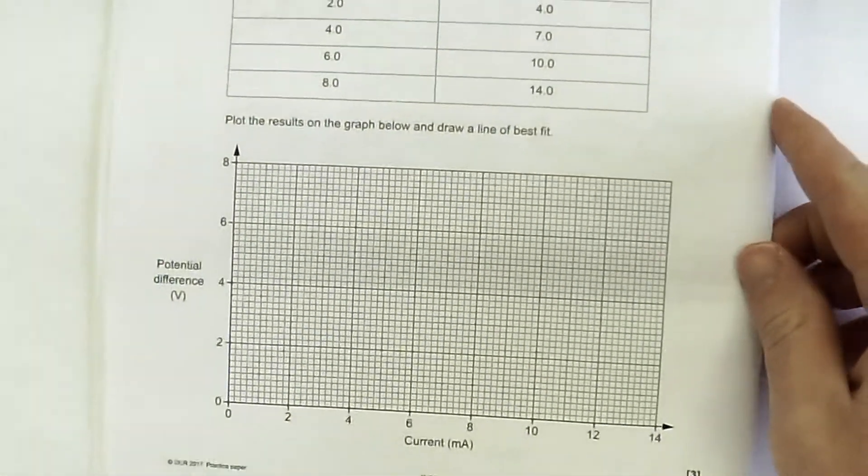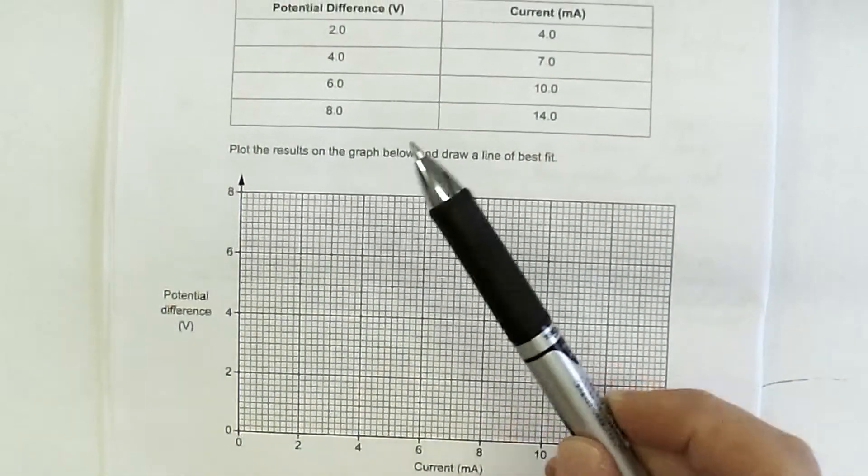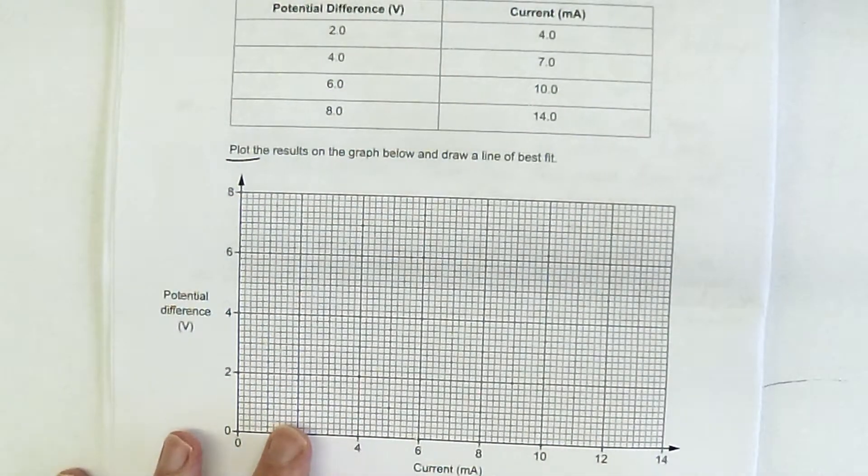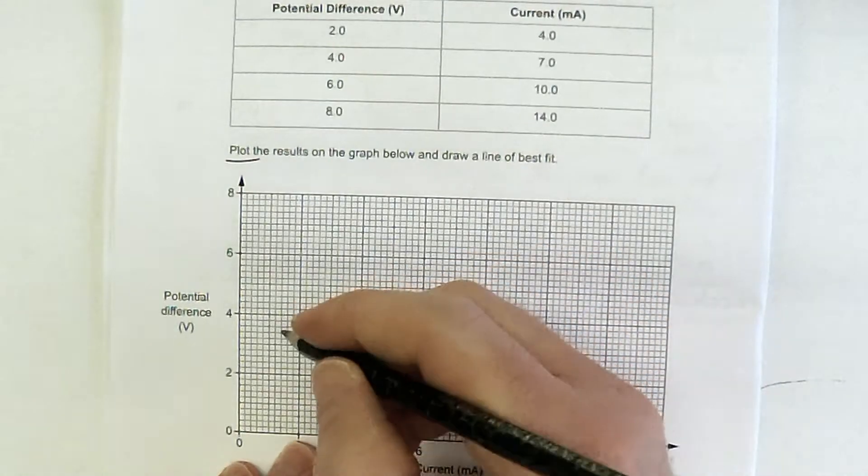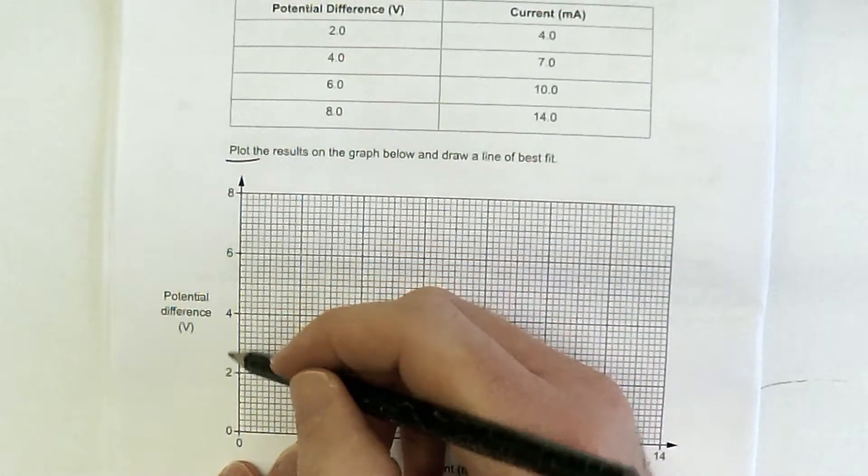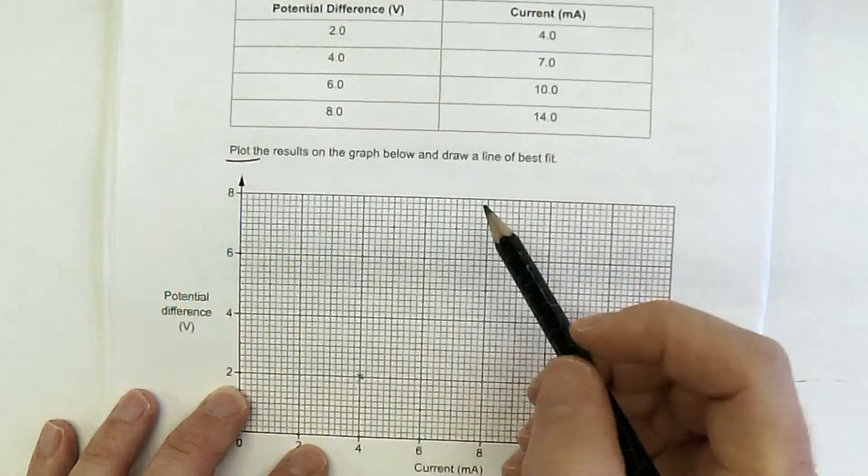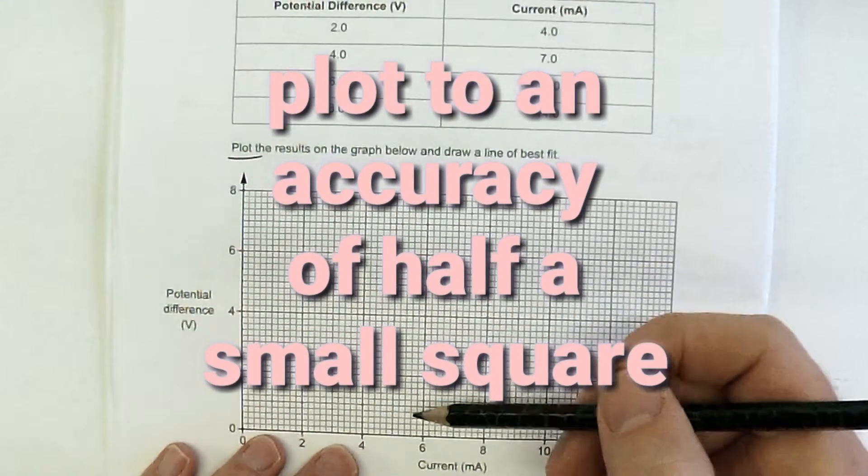So moving on to see the student's results. This is an Ohm's law practical, so you expect them to be Ohmic. So the command word is plot the results on the graph below and draw a line of best fit. So 2 volts, 4 amps, 2 volts, 4 amps. You need to be accurate to half a small square, by the way, when you're using graphs in these new GCSEs.